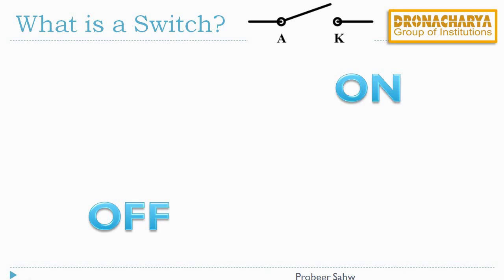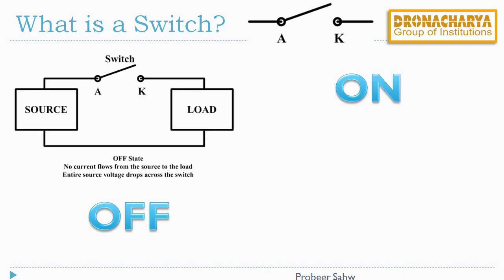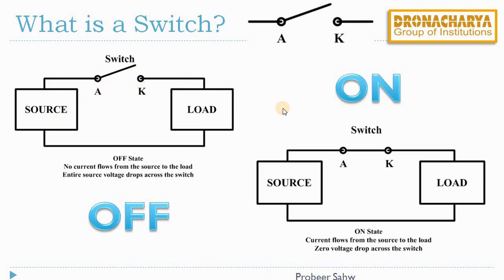In the off condition, the load is drawing no current from the source as the switch is open, and the source voltage appears across this switch. In the on condition, the switch is closed, the circuit is complete, and a current flows from the source to the load. In this condition, there will be no voltage drop across the switch.